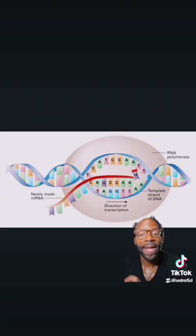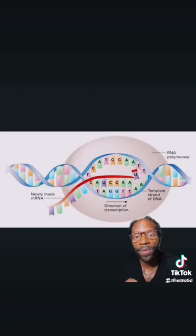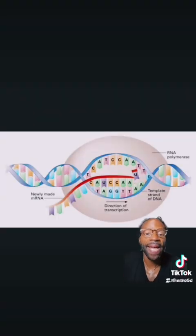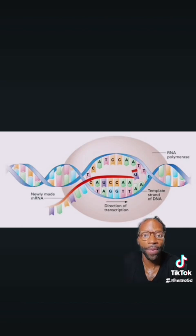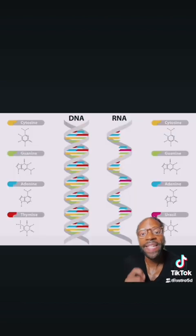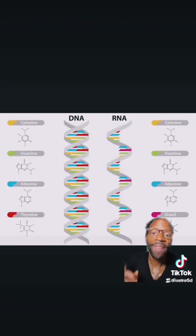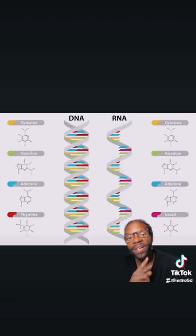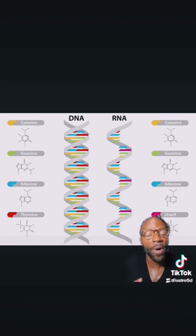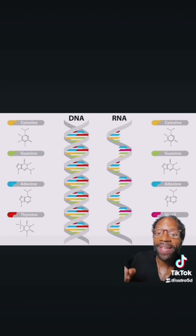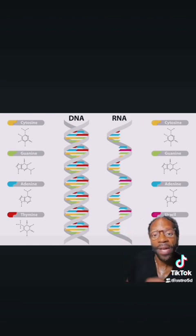RNA has the sugar called ribose and DNA has a sugar called deoxyribose. DNA has a thymine base and RNA has a uracil base, but they both have adenine, guanine, and cytosine.